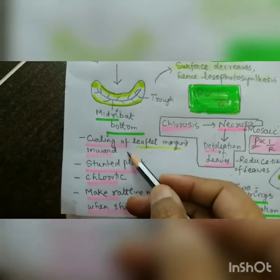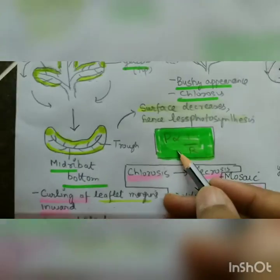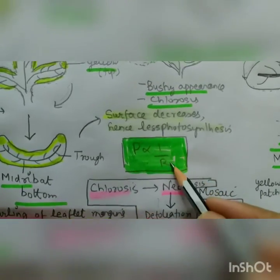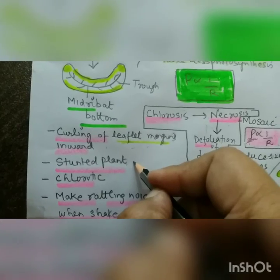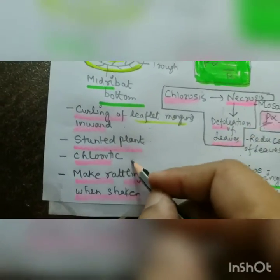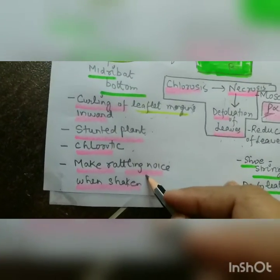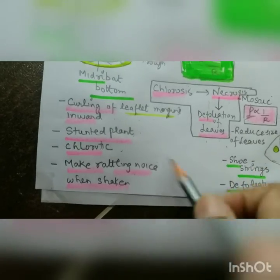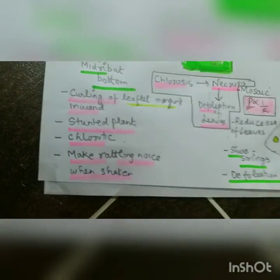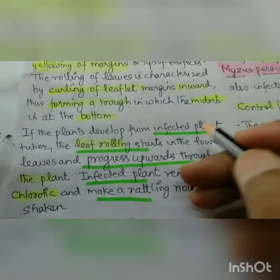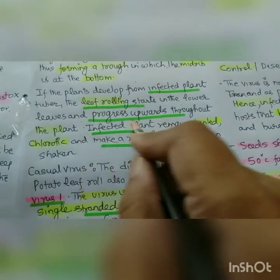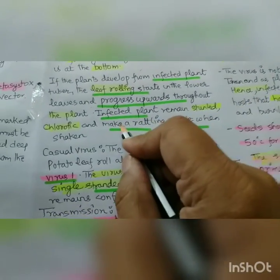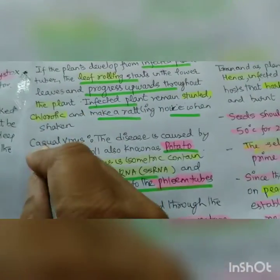With curling of leaflet margins inward, the photosynthetic area decreases, photosynthesis decreases and respiration increases — leading to stunted growth because energy is not produced. The leaves become chlorotic and, when shaken, give a rattling noise. If plants develop from infected tubers, leaf rolling starts in the lower leaves and progresses upwards. Infected plants remain stunted because rolling causes chlorosis and rattling noise.